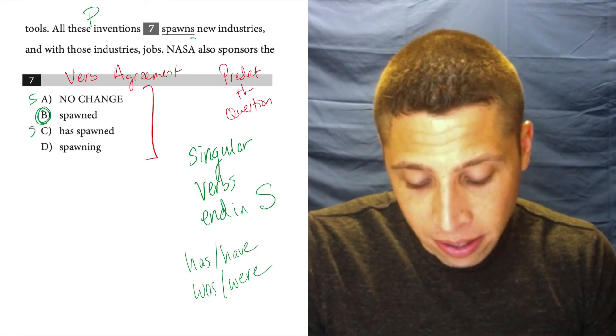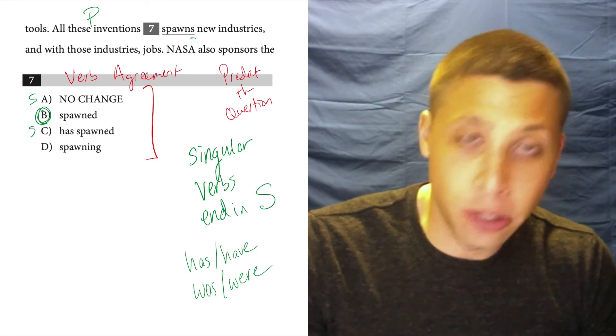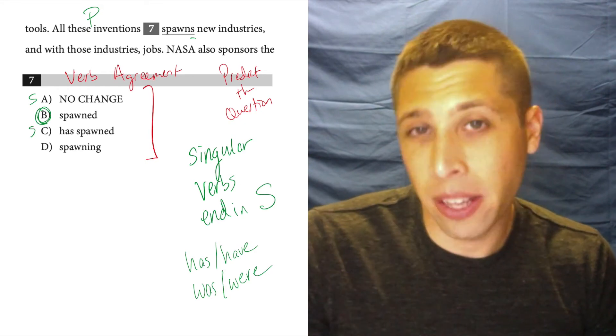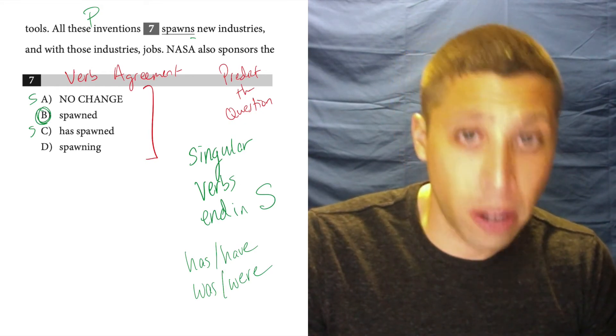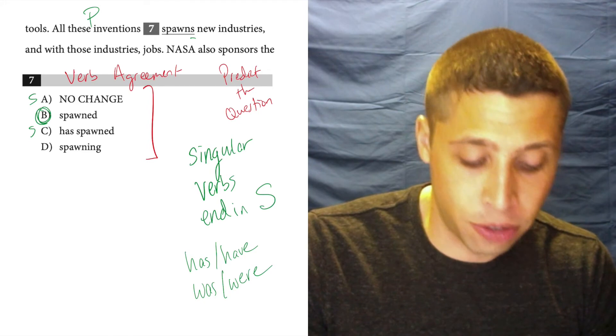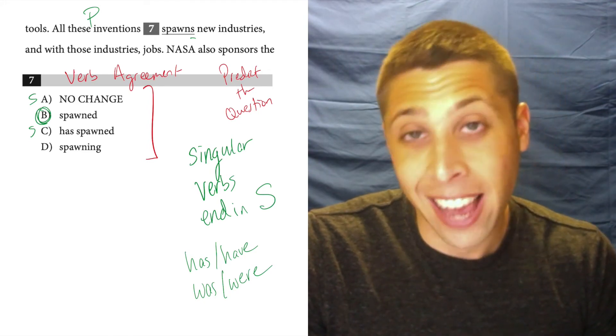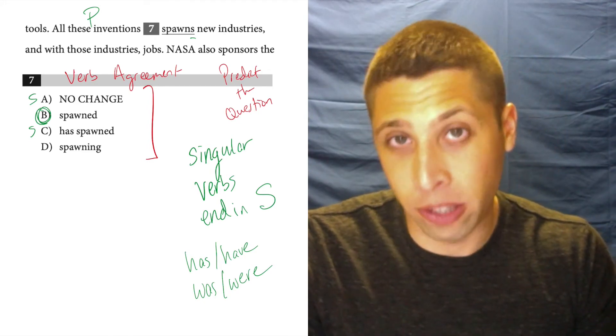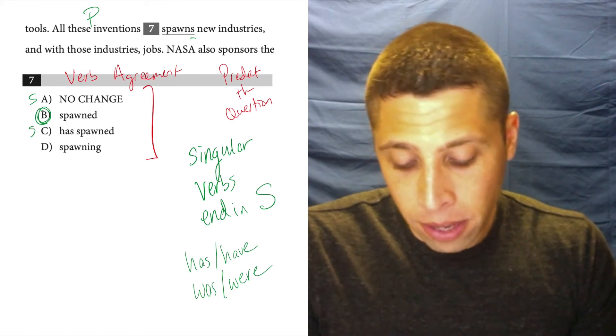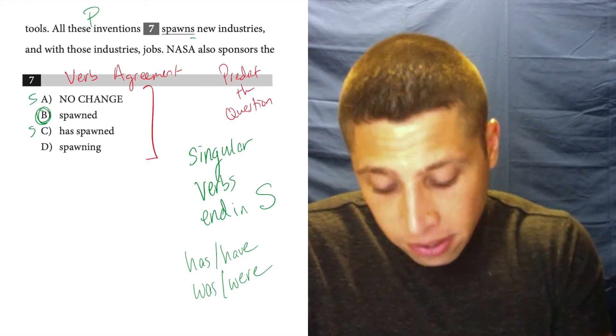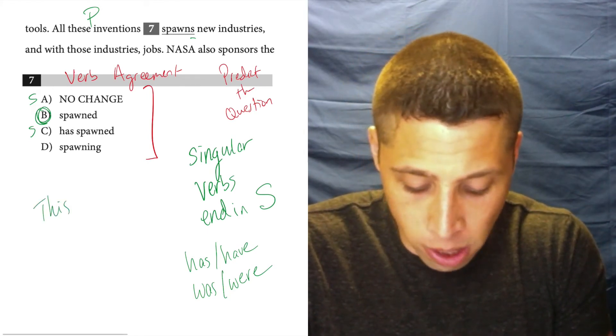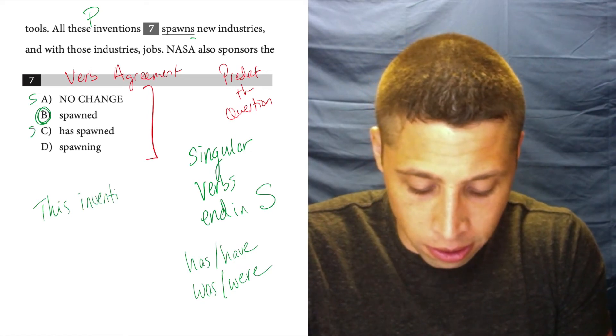It would be weird to say these inventions spawns new industries, right? We would say these inventions spawn, without an S, new industries. These inventions have spawned new industries. Now, if we changed it to this invention, one invention, this invention,